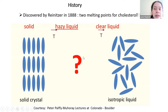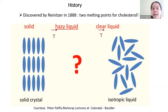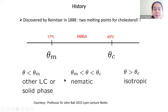Liquid crystals were actually discovered by accident, by an Austrian biochemist called Frederick Reinitzer. He had a cholesterol sample and he was heating it, and when heating the solid sample, he just expected the sample to relax to a clear liquid. But instead, he found an intermediate hazy liquid with rather turbid optical properties. That was actually the first experimental observation of a cholesterol liquid crystal.